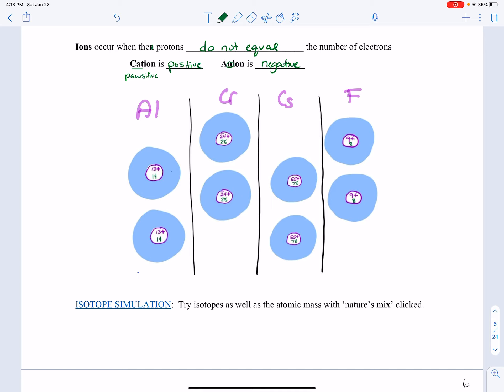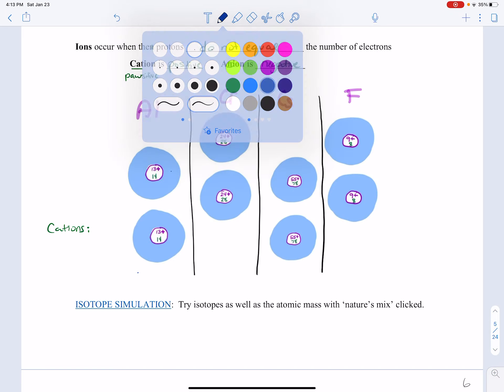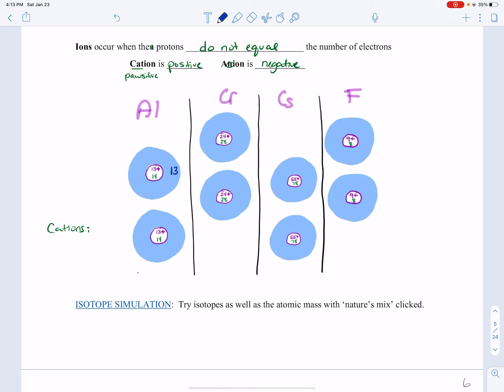So we're going to begin by making these atoms cations. So the top one is the neutral form. So let's go through really quick and write in our electrons. So this one has 13 electrons.